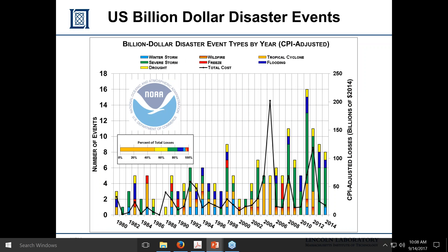What ends up happening, at least in the United States, is billion-dollar disasters. People in large urban centers get hit with huge storms — cyclones or other severe events — and the amount of money spent to compensate grows larger and larger. On the right-hand side is CPI-adjusted losses in billions of dollars. There's a spike for Hurricane Katrina, and there will be another for Harvey. These trends suggest that as people concentrate in cities, you end up with very costly problems.